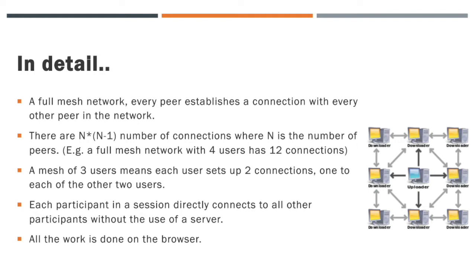Hence there are n×(n-1) number of connections, where n is the number of peers. For example, a full mesh network with four users has 12 connections. Each participant in a session directly connects to all other participants without the use of a server.